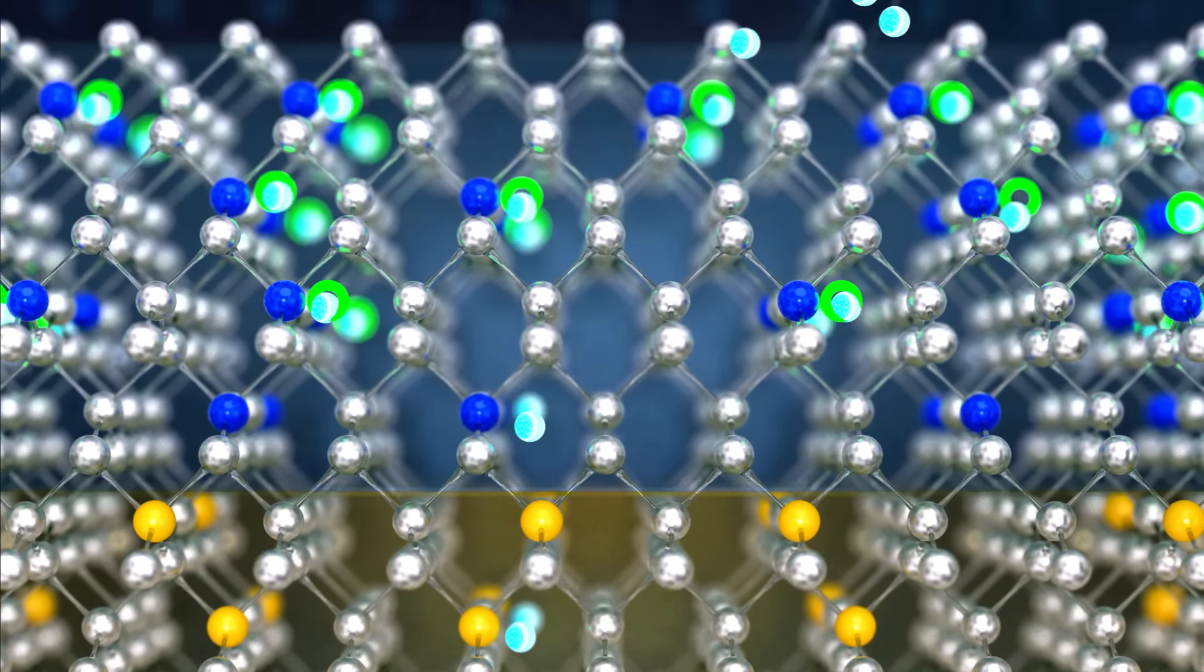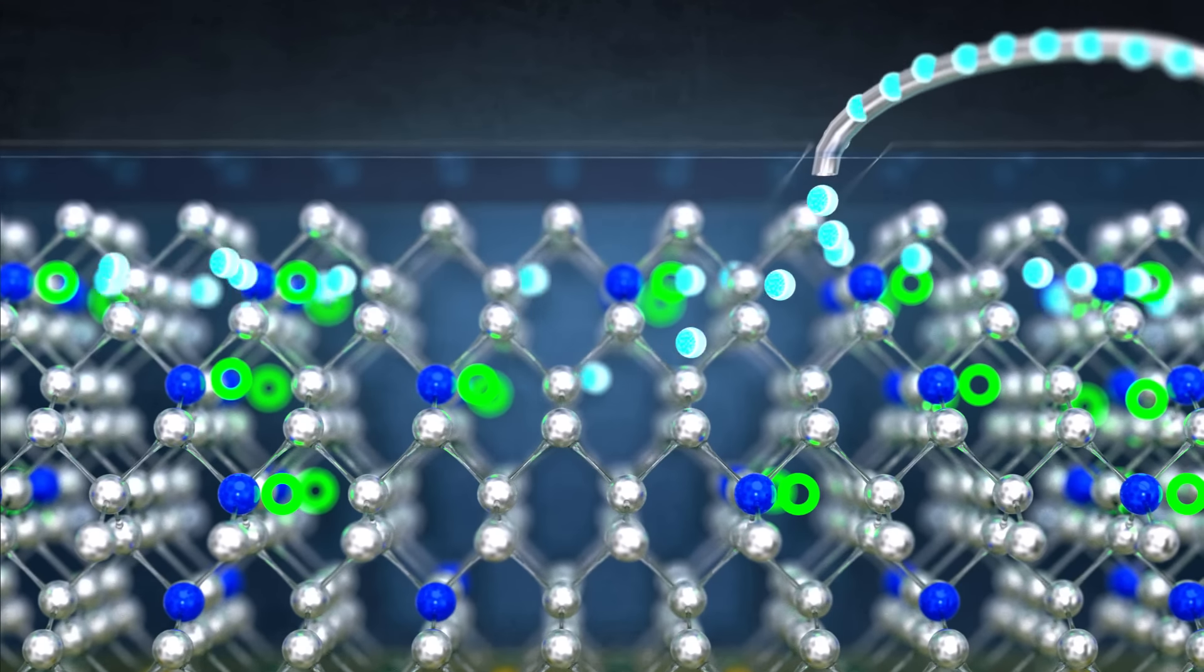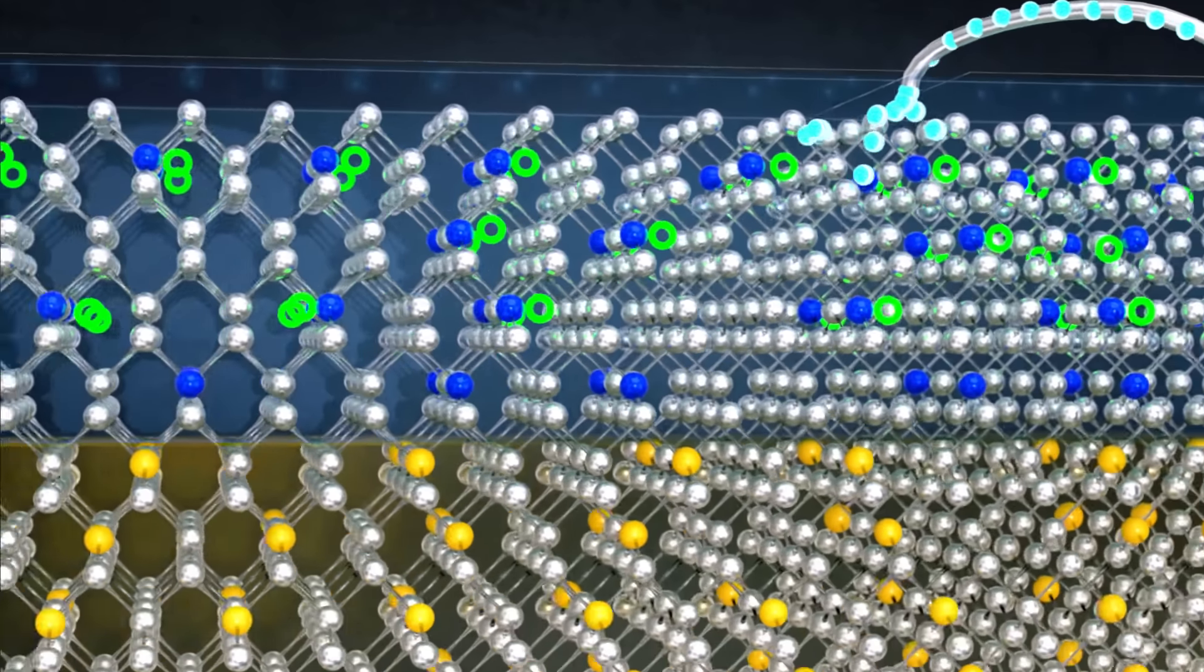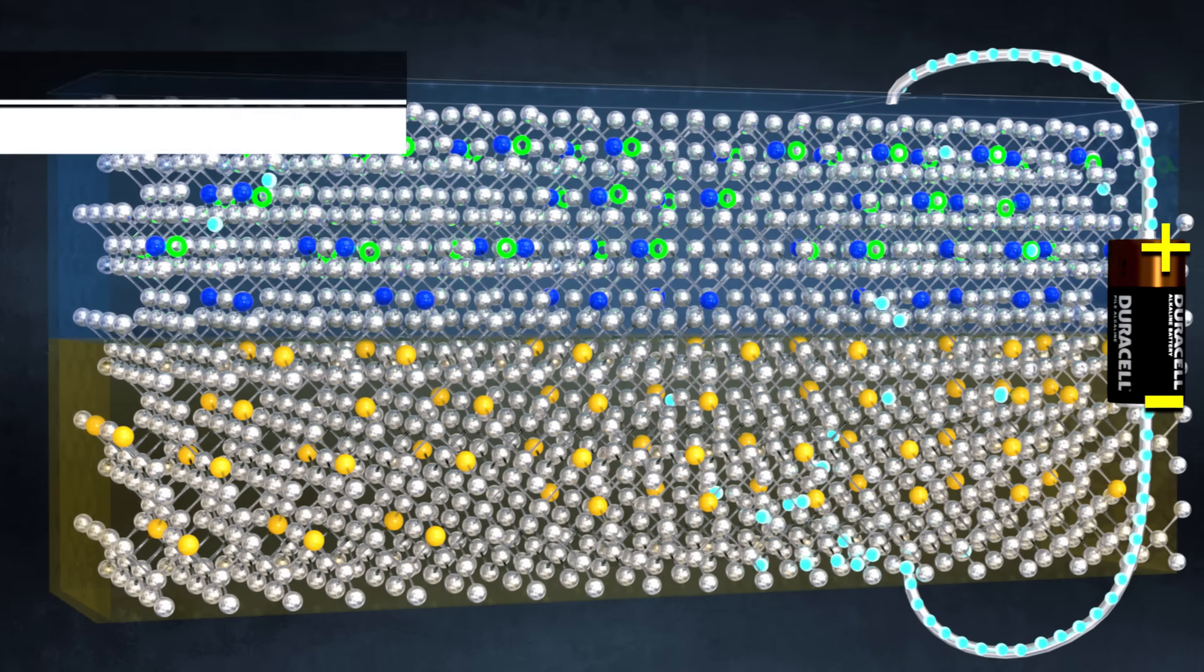After crossing, they will occupy the holes available in the p-region. Due to the attraction of the n-region, these electrons will jump to the nearby holes, and the flow will continue. Here, the diode is working in a forward biased condition.